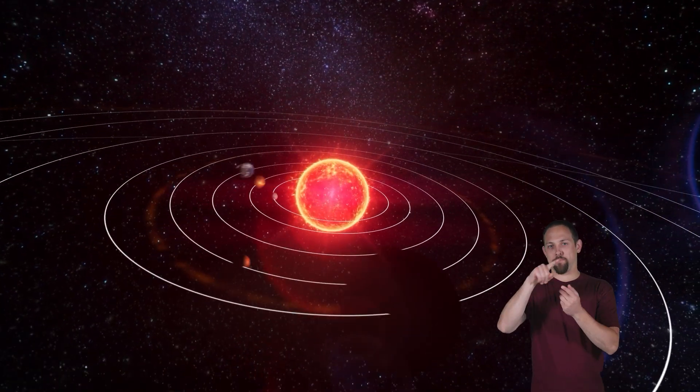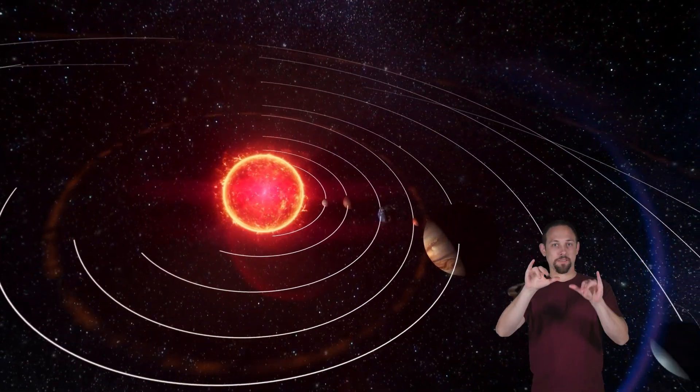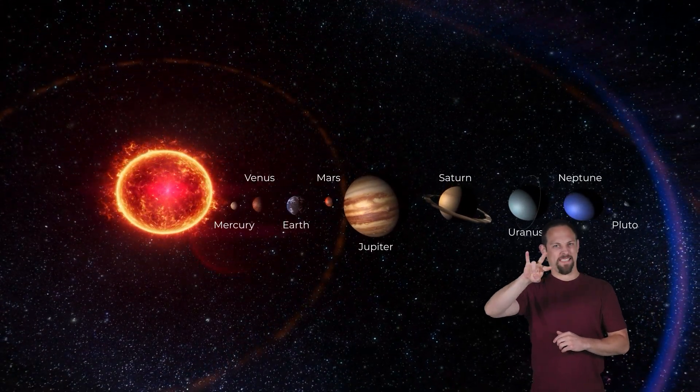Uranus. We are learning about the planets in our solar system. Today, we are traveling all the way to Uranus, the seventh planet from the Sun.